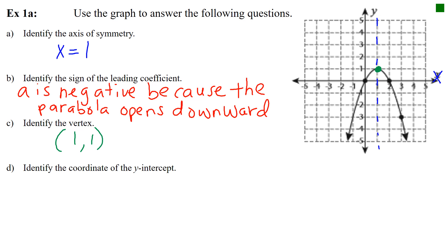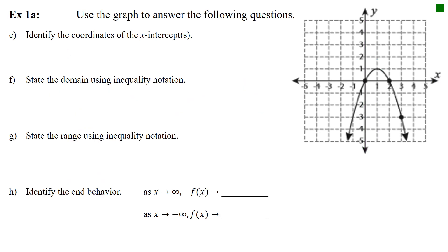Part d: identify the coordinate of the y-intercept — where the graph crosses the y-axis. This parabola crosses the y-axis at the origin, so (0, 0). Part e: identify the coordinates of the x-intercepts — where the graph crosses the x-axis. There are two points: the one on the left is (0, 0), which is also the y-intercept, and the one on the right is (2, 0).